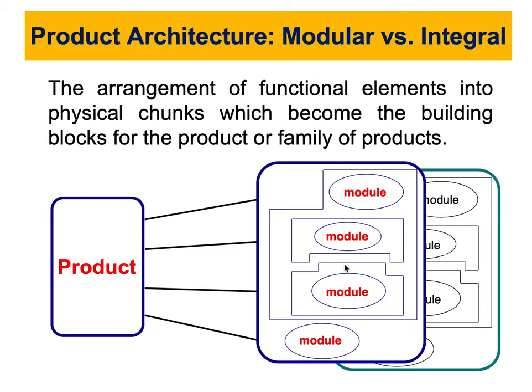When we have well-defined interactions between chunks, modular architecture allows a design to change — if we want to make any modifications, we can change just that chunk without requiring changes to the entire product or its functionality. When we have specialized functions identified for each chunk, modifications become straightforward.